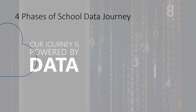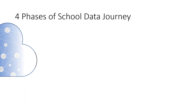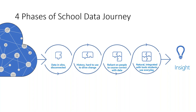Traditionally, there have been four phases of the school data journey. Data was in silos — unconnected, disconnected, sometimes not even digital. It was displayed but historical, hard to use to drive change because of timing. Predictability was still kind of a gut feeling — not purely data-driven. There's been some research and discussion around biases, whether willing or unwilling, that crept into the analysis.